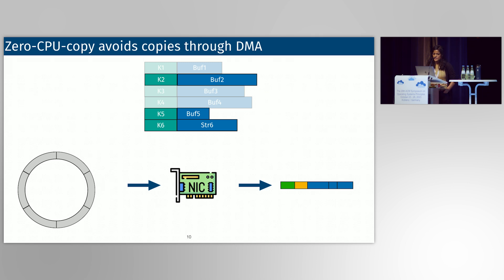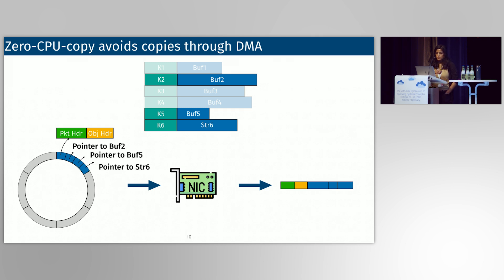What are these zero copy APIs? Here we have the same example where the application is serializing buff2, buff5, and string6. Before, the application copied all the data into a single buffer and told the NIC to fetch a single pointer. Instead, we can take advantage of the NIC's direct memory access capabilities. Specifically, we can tell the NIC about where the headers lay, and we can give it direct pointers to buff2, buff5, and string6. The NIC can use its scatter-gather capabilities to gather these different non-contiguous memory pointers into a single contiguous buffer on NIC memory and send it out.